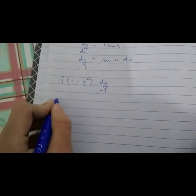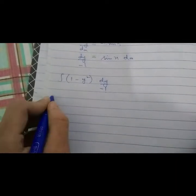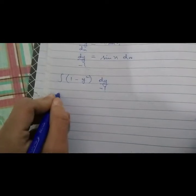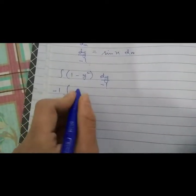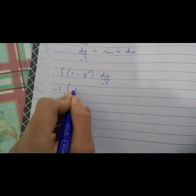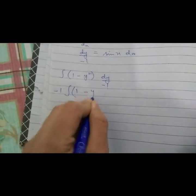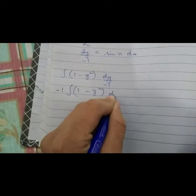Minus 1 will be shifted to the front side. Take minus common: 1 minus y squared dy.